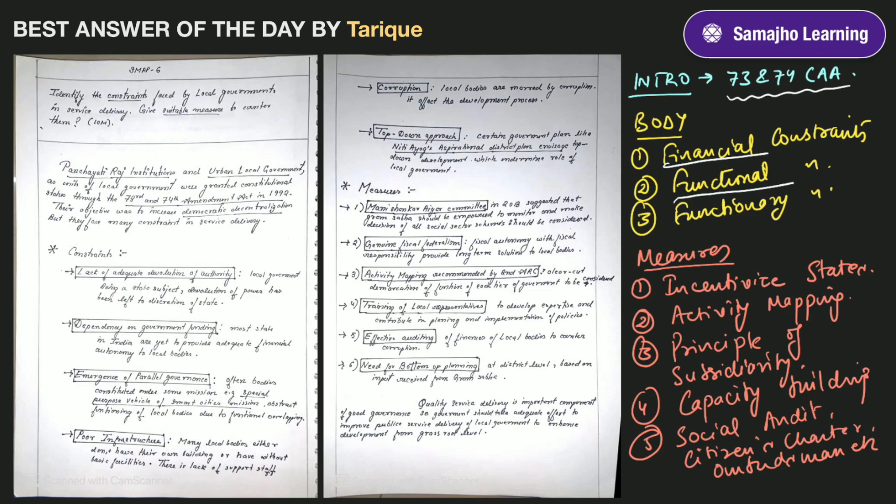And then you can talk about the functionary constraints. State government officials define how to work. The staff of local government is understaffed, under-skilled. It is an elected body, and the elected representatives with limited knowledge have to work with government employees who have been posted there for political tasks.